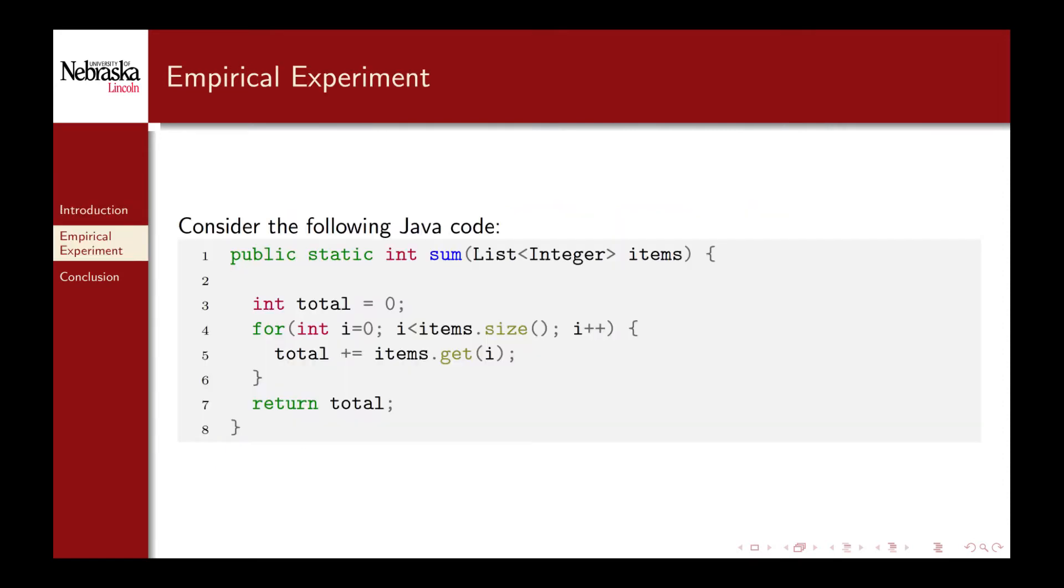To see this in practice consider the following experiment. I've written some very simple Java code that takes a list of integers and sums them up. As you can observe on line 5 I'm using the dot get method. What will the performance of this code be like if we pass it an array list? How would it perform if we passed it a linked list? And how would they ultimately compare?